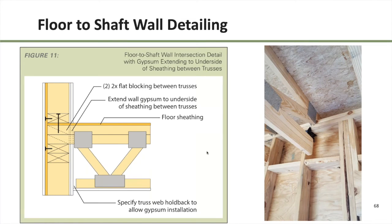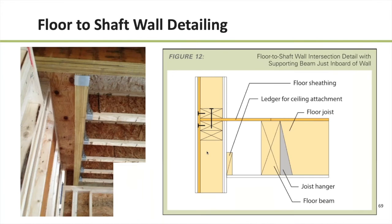A few other options for the floor-to-wall intersection detail: if you're doing top-chord bearing trusses, you're basically notching the wall gypsum around those, creating a structural penetration of a shaft wall that is permitted — and generally protecting that penetration with a firestopping system. Another example detail creates a scenario so that the only thing penetrating the shaft wall is the floor sheathing, which by definition is not obstructing continuity of a fire barrier — so nothing special is required for firestopping.